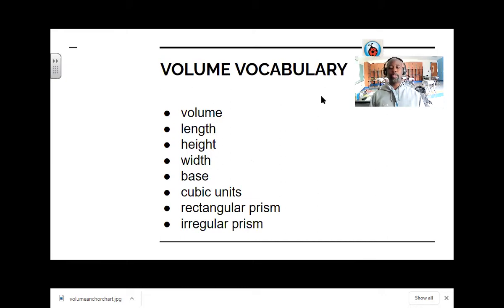These are some of your terms. Volume, which is how much space an object takes up. Length, how long it is. Height, how tall it is from the base to the very top of the shape. Width is how wide it is from front to back. Your base is basically your length and your width combined. That makes up your base. Another word for base could be area. Fourth grade would say area equals your length times your width. Cubic units is what we measure volume with.